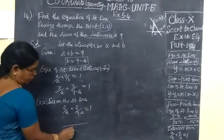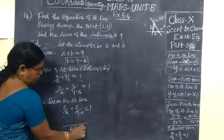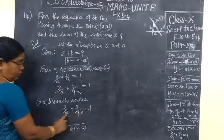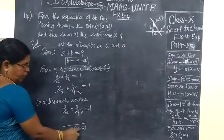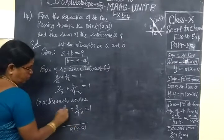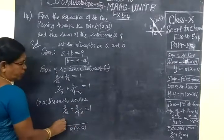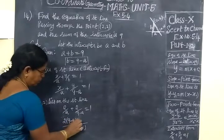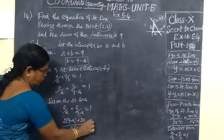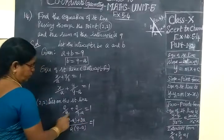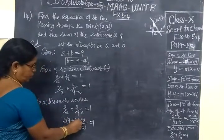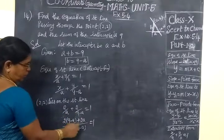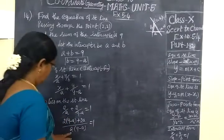So LCM is A times 9 minus A. Cross multiply. So 2 bracket 9 minus A plus 2A, this is equal to 1. So 2 times 9 minus A plus 2A equal to 1.